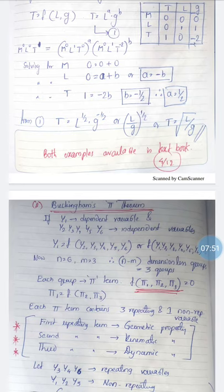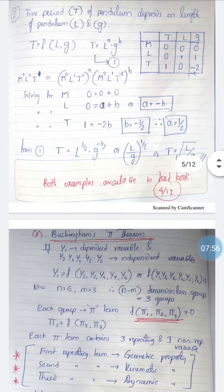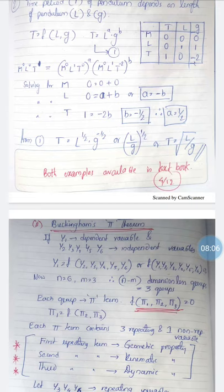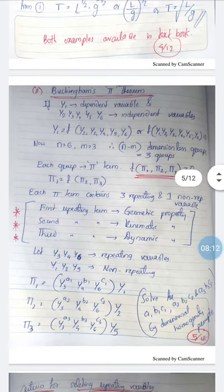The reason Rayleigh's method cannot handle more than three variables is that we have a maximum of three equations to balance — one each for M, L, and T. If there are four variables, there are four unknowns a, b, c, d, and d can never be evaluated. This is the fundamental limitation of Rayleigh's method.